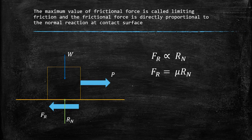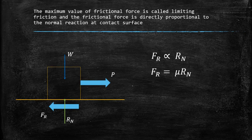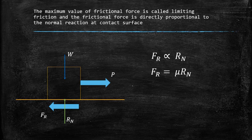Roughness coefficient we can say. Frictional force depends upon the roughness of the surface. Fr is equal to mu times Rn. Fr is dependent on mu and also on Rn. Mu is the roughness coefficient; Rn is the normal reaction.